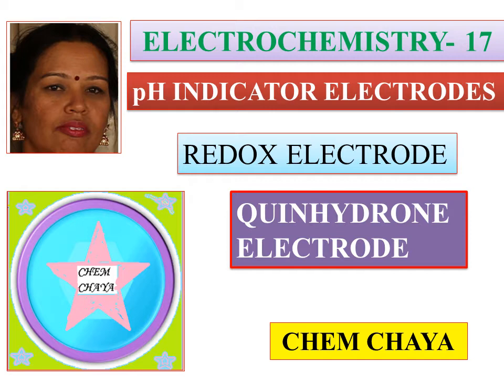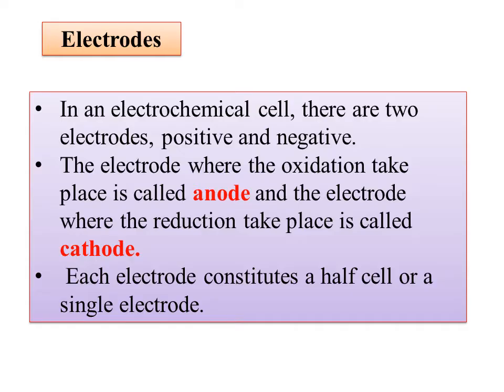Next, it has a redox electrode and a pH indicator electrode. You can find example questions. In this case, you can use 2-mark and 4-mark questions.